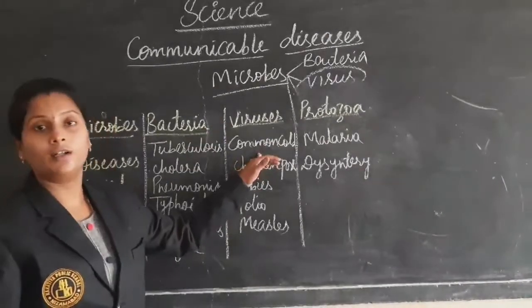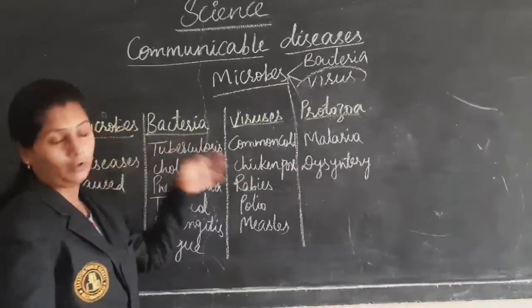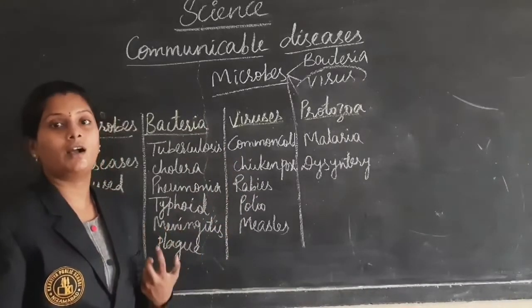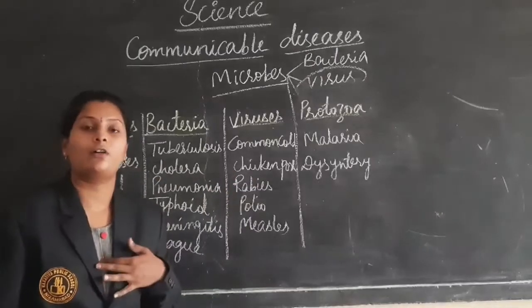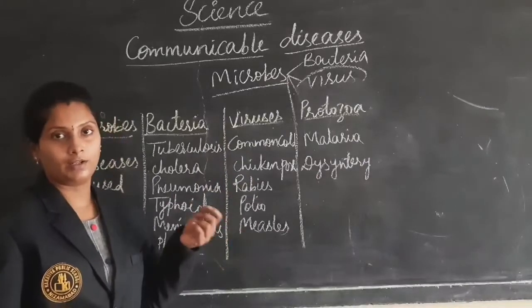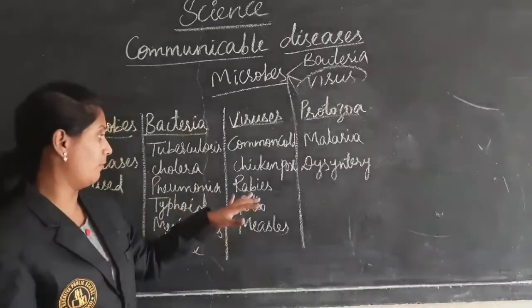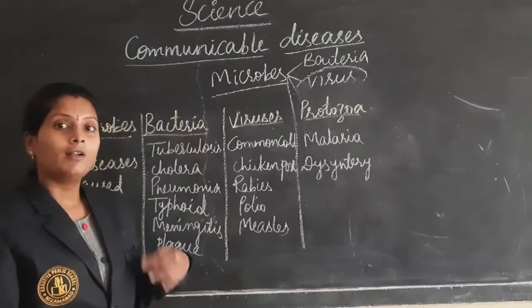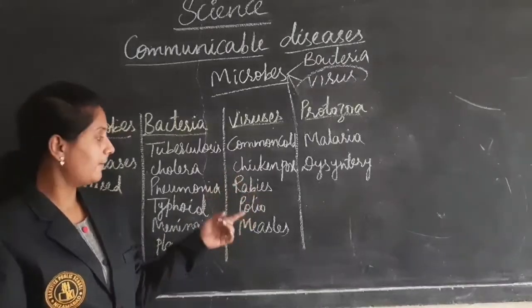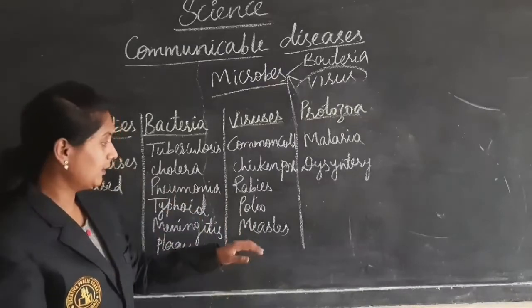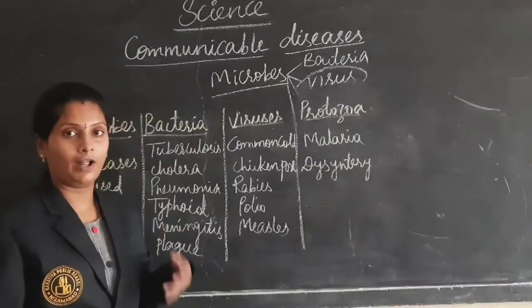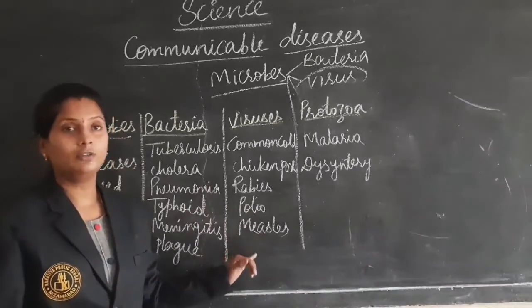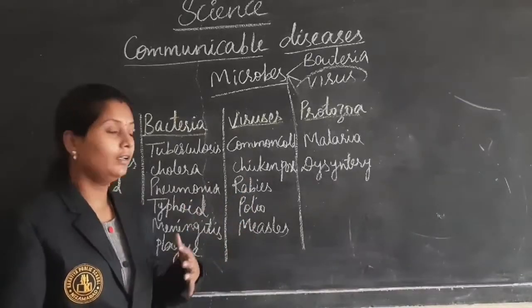Next, coming to the viruses. The diseases they are spreading include common cold, chicken pox, rabies, polio, and measles. Common cold and cough we are always getting — that is from viruses. Chicken pox causes small air-like bubbles on the total body, also because of a virus. Rabies is nothing but from a dog bite. Polio involves an attacking of paralysis — our limbs lose energy and life. And measles also causes coughing and sneezing.